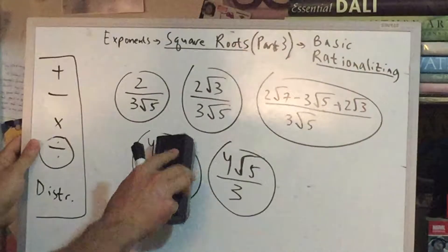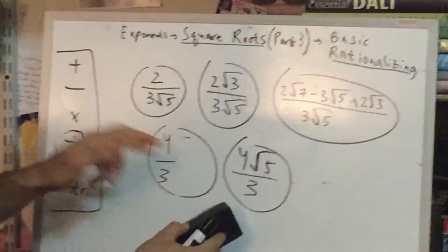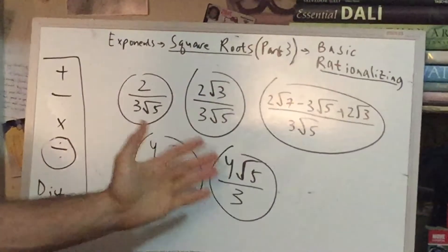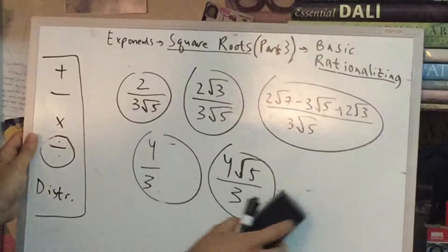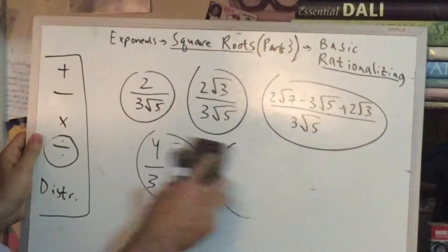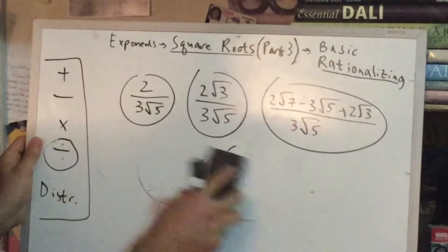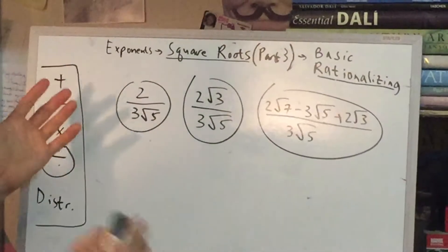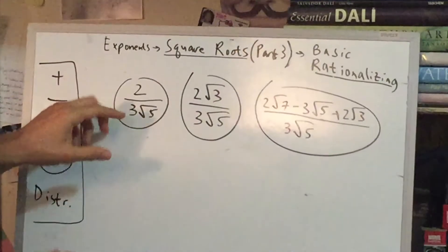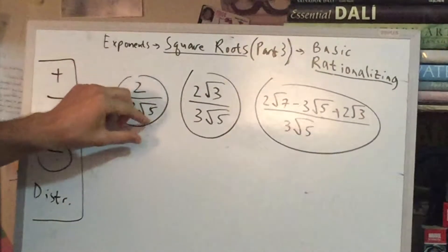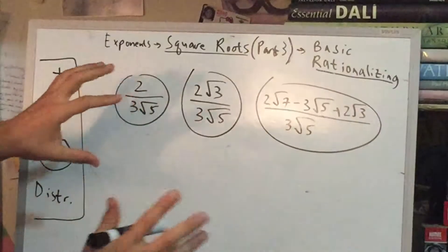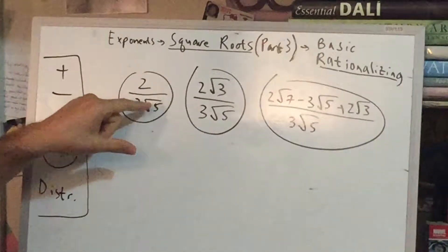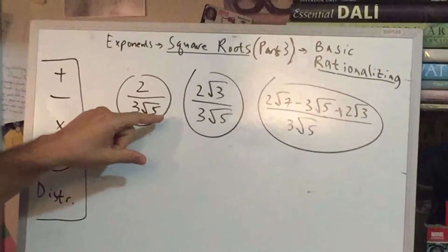From the previous video, the easy case for division is these two, and these are ugly. In these cases, the fives cancel, so there's really not much to do — this just becomes four thirds. And in this case, we're actually just done; there's nothing to do. So these two are easy cases.